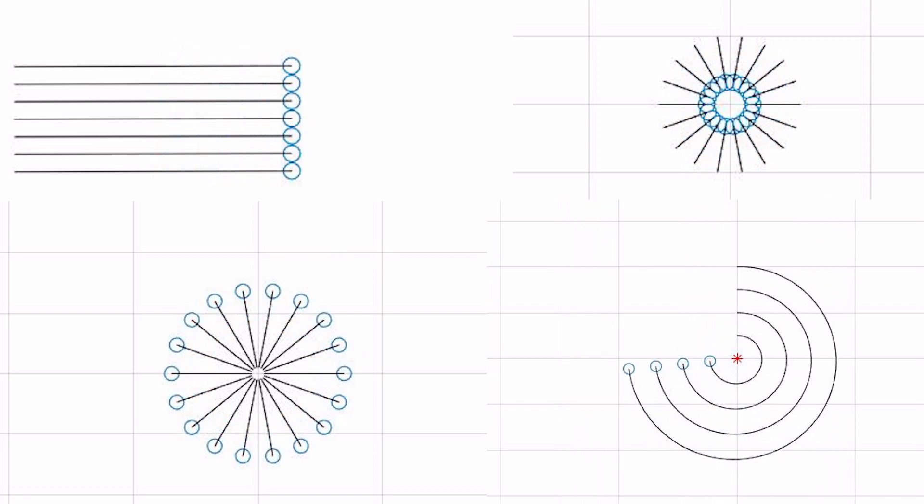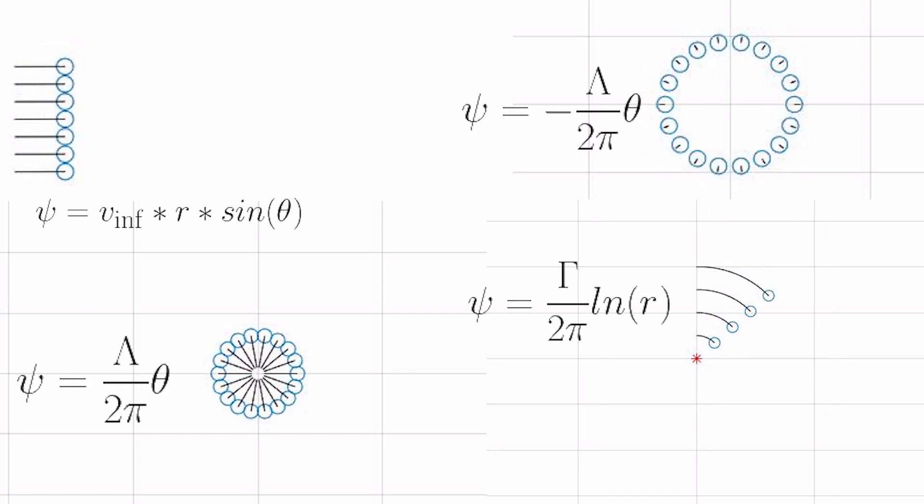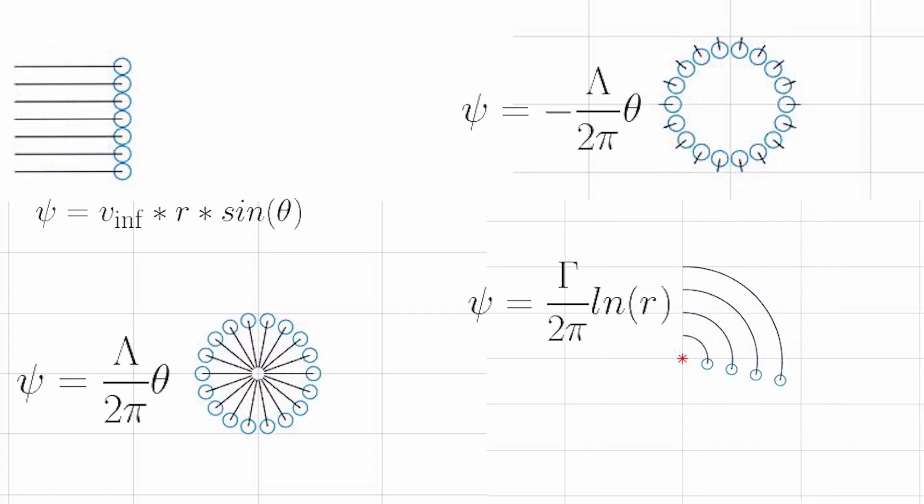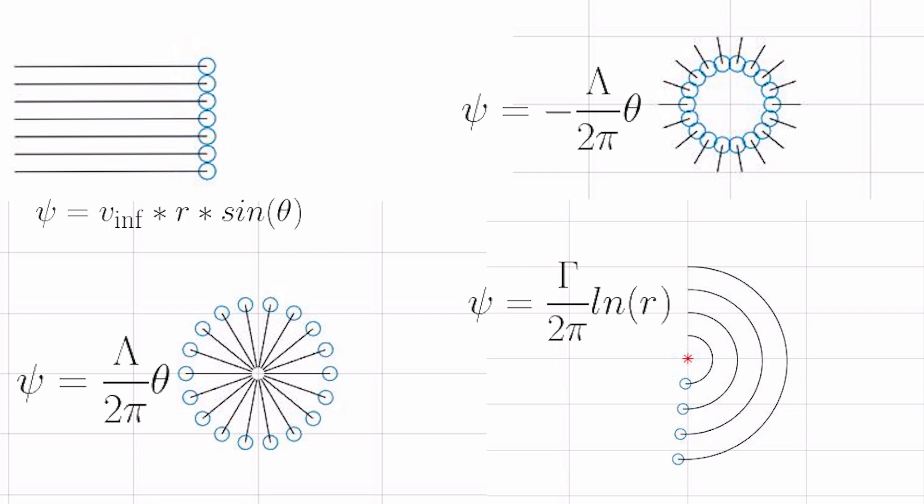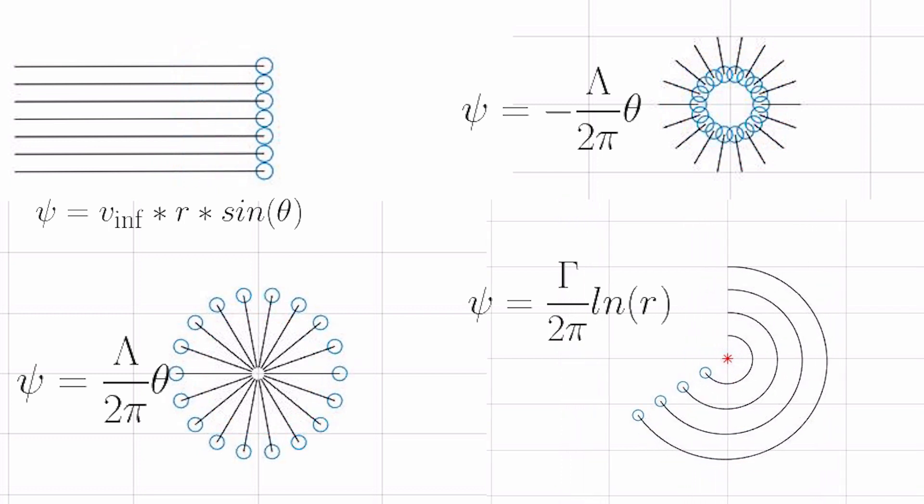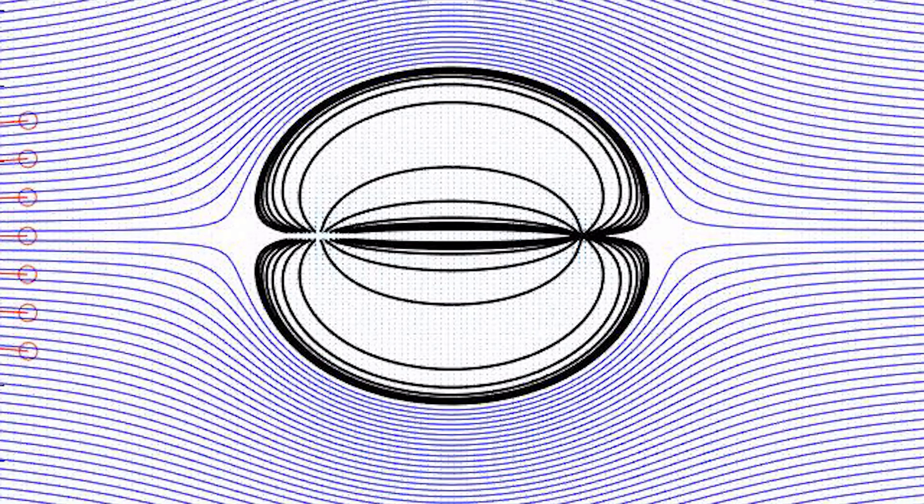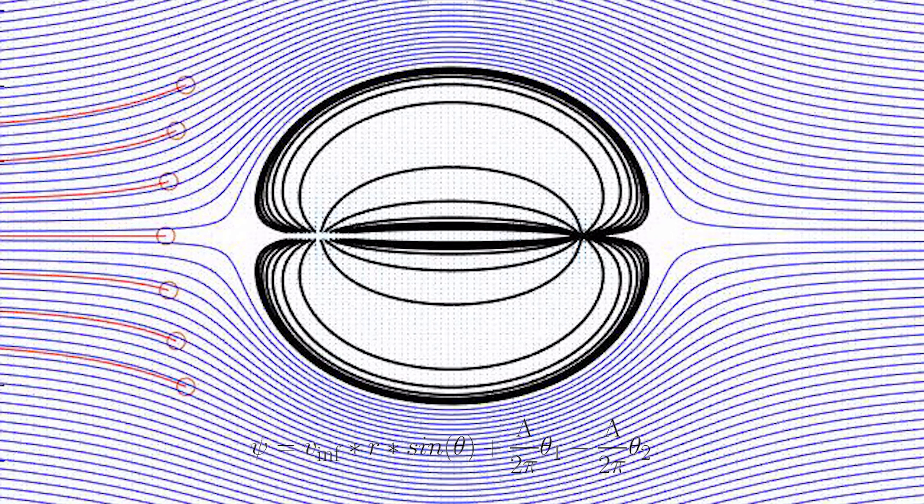This property enables us to model flows around relatively complex geometries with ease. For example, consider the individual mathematical expressions that describe all the elementary flows. To get the resultant mathematical expression for the source and sink in combination with a uniform flow, all you have to do is add the terms together.